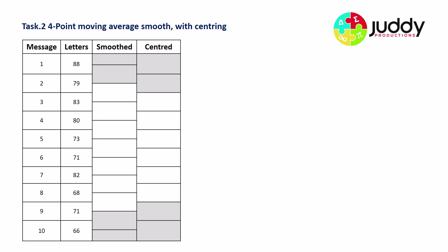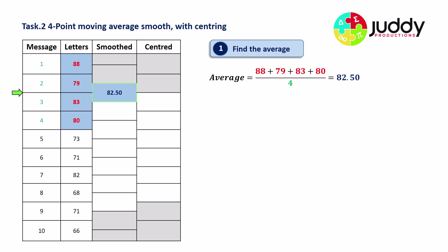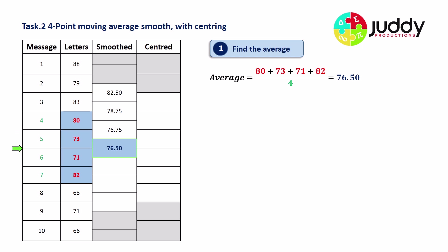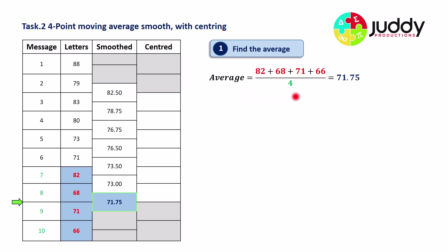Now let's look at a four-point moving average smooth with centering. We take our first four points — 88, 79, 83, 80 — add them and divide by four, giving 82.5. However, that value sits at position 2.5. The next four give 78.75, continuing down until the final four values (82, 68, 71, 66) average to 71.75, aligned at position 8.5.